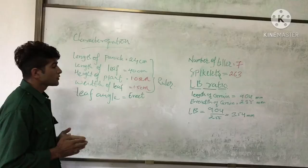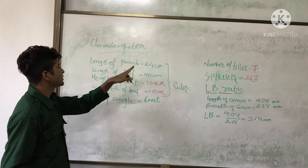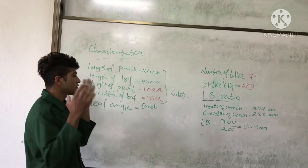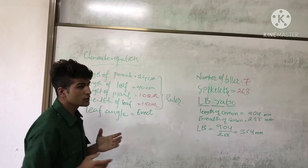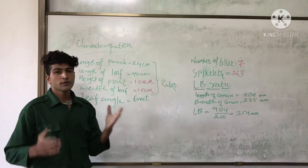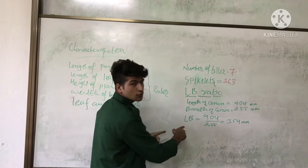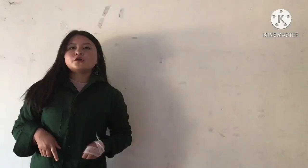We also did a characterization in direct seeded rice in the field. We found the length of the panicle to be 24 centimeters, length of the leaf 40 centimeters, height of the plant 1.02 meters, and width of the leaf 1.5 centimeters, measured using a ruler. The number of tillers was only seven — Dr. Mahesh Kimireo told us the lower number was due to direct seeding. The spikelet count was 263. We also calculated the LV ratio using a Vernier caliper; the formula is length of grain divided by breadth of grain, and we found the LV ratio to be 3.54 mm.